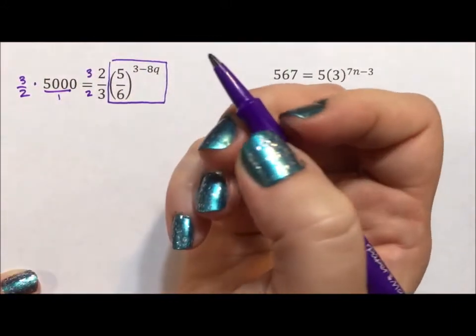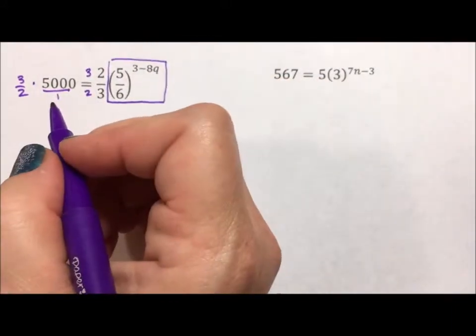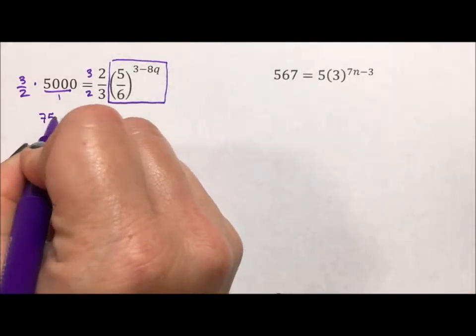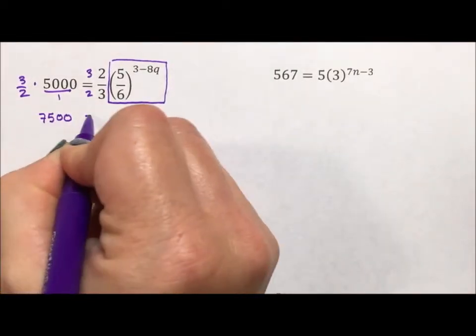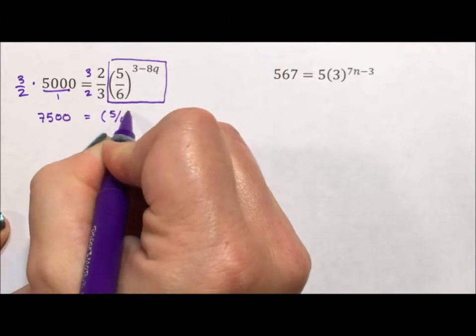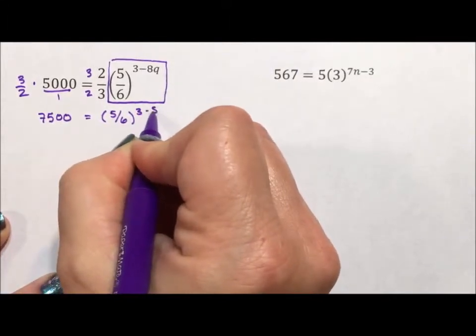Multiplying both sides by 3/2 times 3/2. You can make this a fraction if it helps. So that I have 7,500 is equal to 5/6 to the 3 minus 8q.